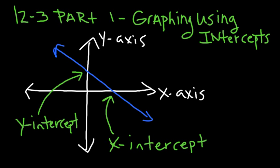Intercepts are the places where your line crosses the x or y axis. There's an x-intercept where your line crosses the x-axis, and there's a y-intercept where your line crosses the y-axis.